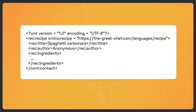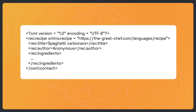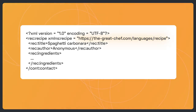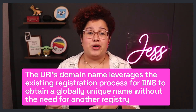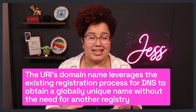That namespace is a set of names for the XML elements and attributes that allows you to define a cooking recipe. By the way, don't use that namespace — it was invented just for this video. Although the format of the URI is the same as a URL, it doesn't allow you to access any resource on the web. However, using this format lets you reduce name clashing between namespaces. In fact, the domain name of a URI is not intended as the name of a server hosting a resource — it leverages the existing DNS registration process to obtain a globally unique name without needing another registry.